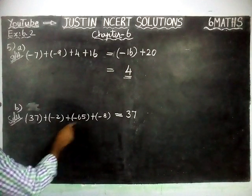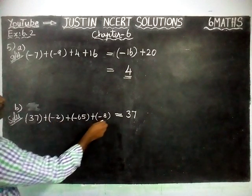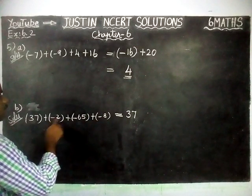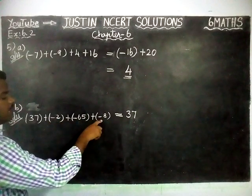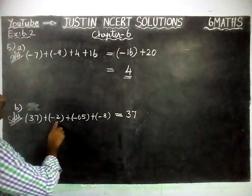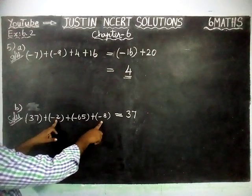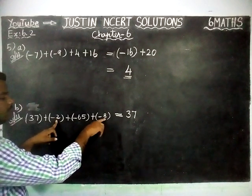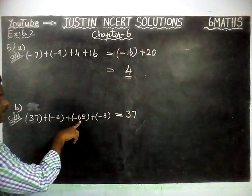Again, I am repeating the same. Minus 2, minus 8. Listen. 1, 2, 3. These 3 numbers are also negative numbers. So, we are going to add all these negative numbers. 8 plus 2 is equal to 10. 10 plus 65 is equal to 75.